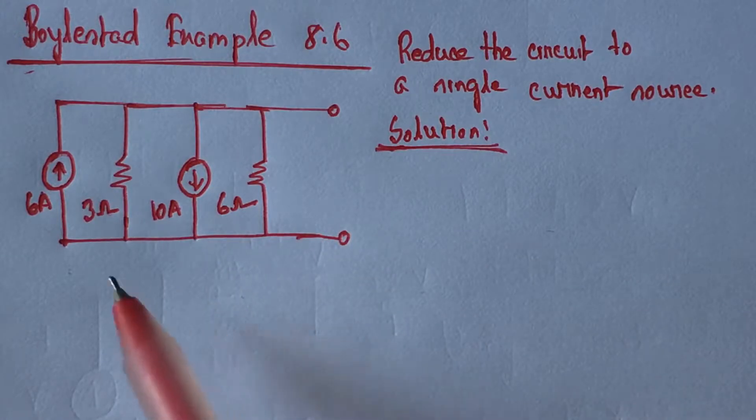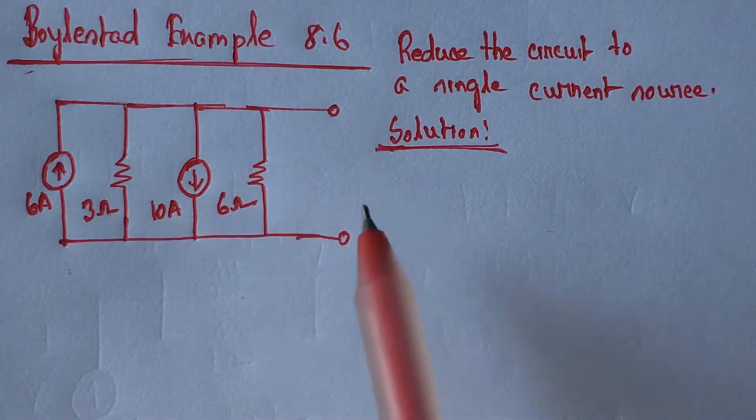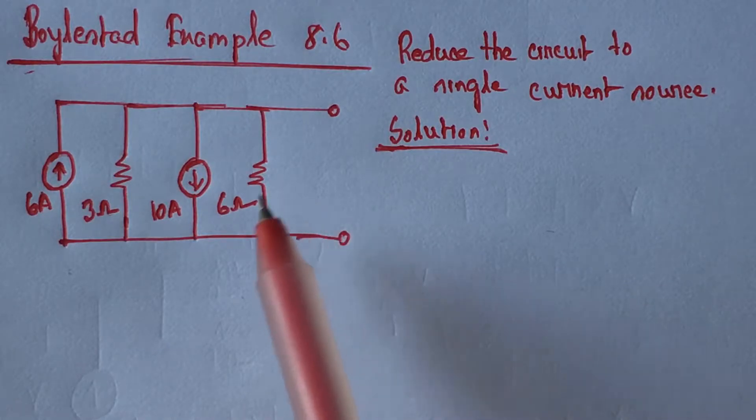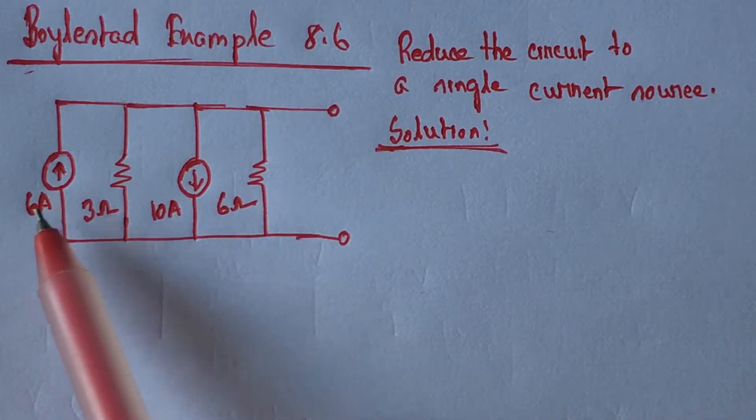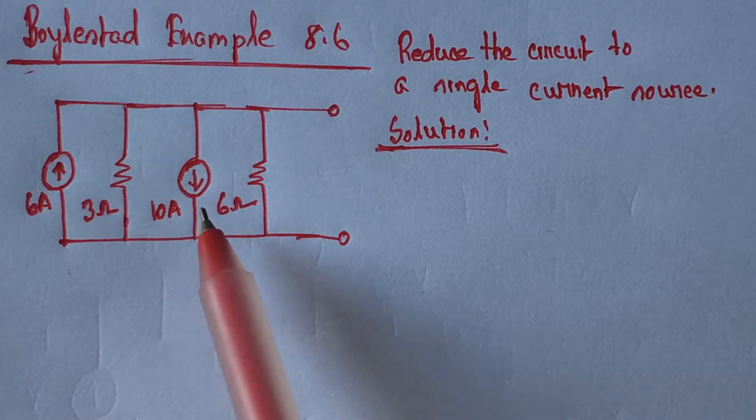For solving this type of problem, the polarity of the current source is vital. From the circuit, we see that 6 ampere current is flowing upward and 10 ampere current is flowing downward.